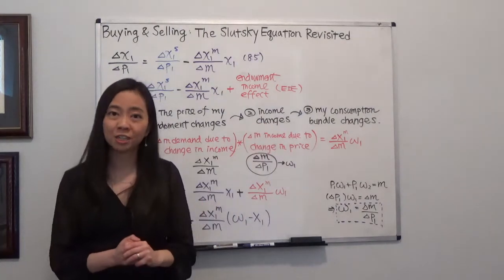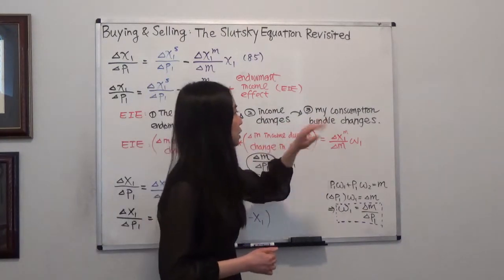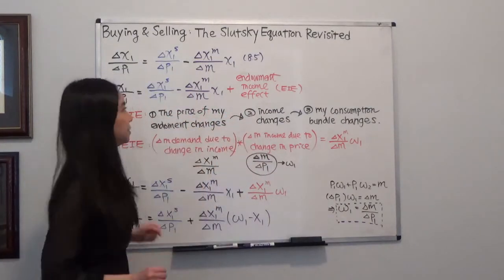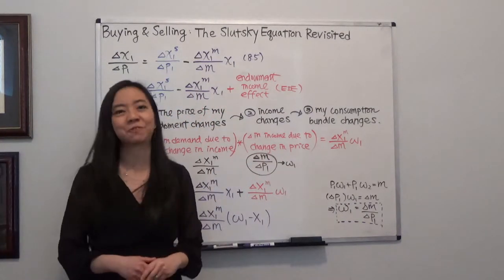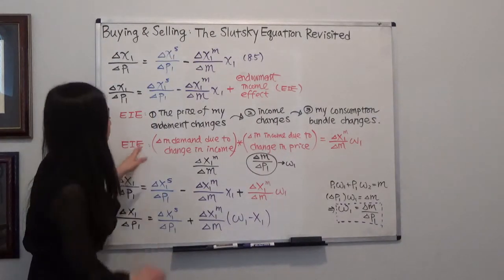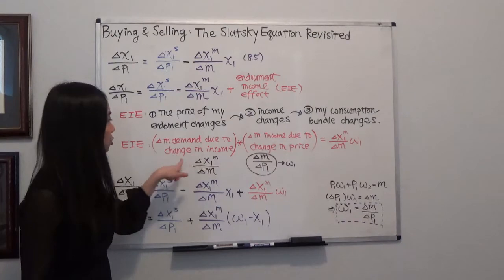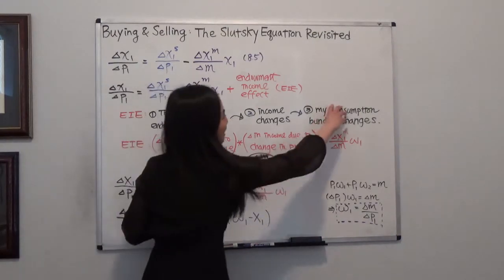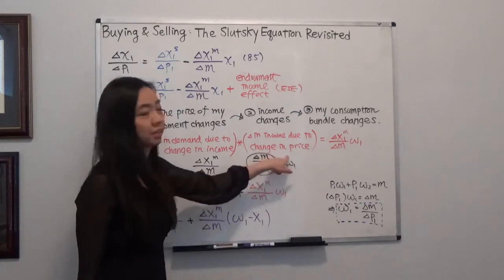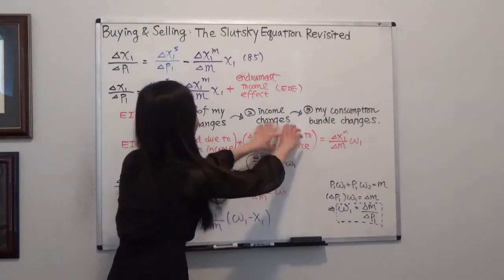So my income is going to change. And once my income changes, that is going to cause my consumption bundle to change. So combine them together, that will be the endowment income effect. So endowment income effect is equal to the change in demand due to changing income times the change in income due to changing price.